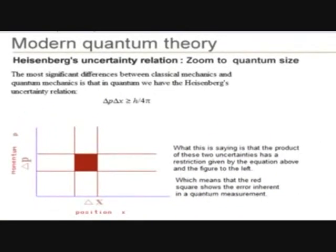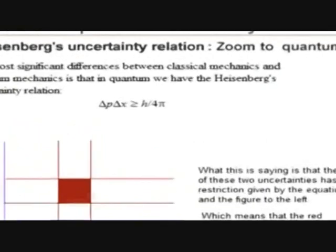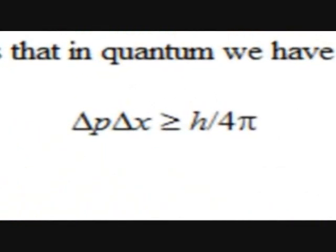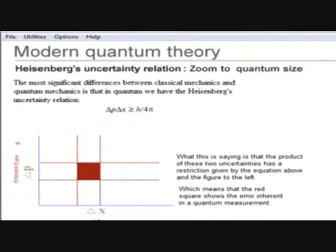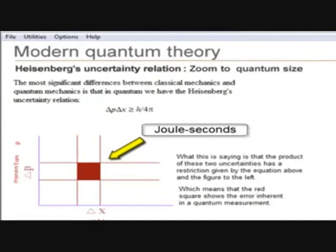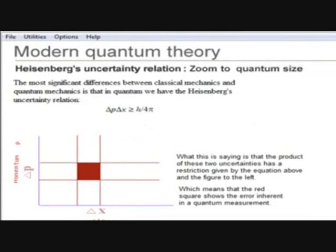Heisenberg's uncertainty principle states that the minimum size of this is Planck's constant divided by four pi. The units of momentum times position are joule seconds. This finite size means that there is an inherent fundamental error when we attempt to simultaneously measure position and momentum. This error is due to the interference of wave properties of particles, which means that in quantum measurements there is a fundamental error we can never overcome.